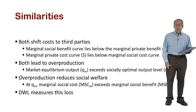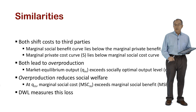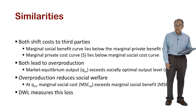In terms of the similarities, it's important to understand that consumption and production externalities are, in a sense, a situation in which private individuals or private firms are shifting costs or burdens onto third parties. As a consequence of shifting costs onto third parties, this tends to lead to overproduction when we have a competitive market. Overproduction, because it is an inefficiency, reduces social welfare.